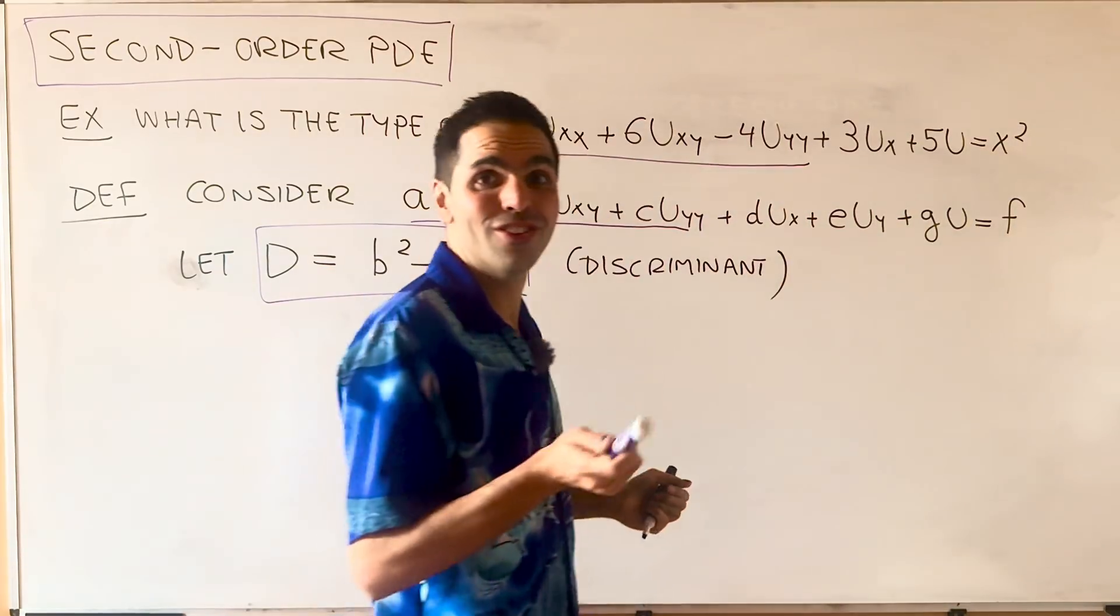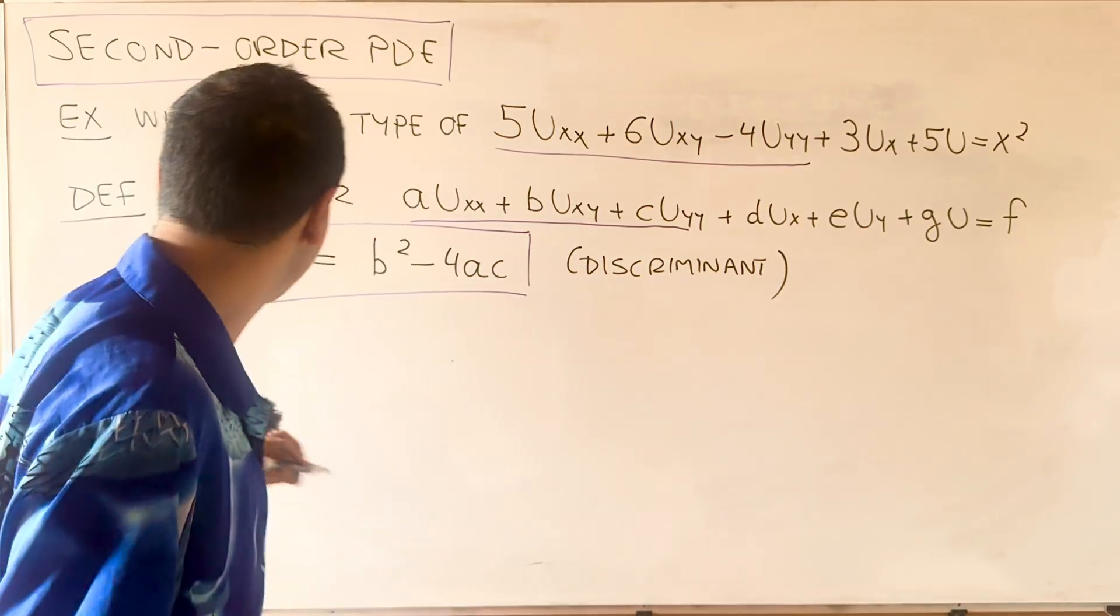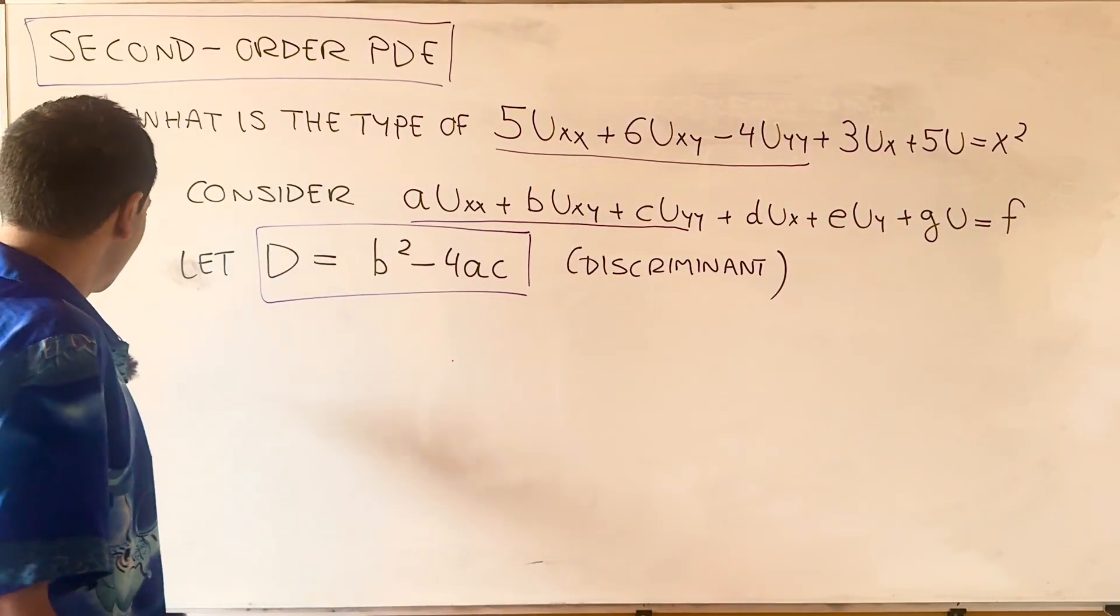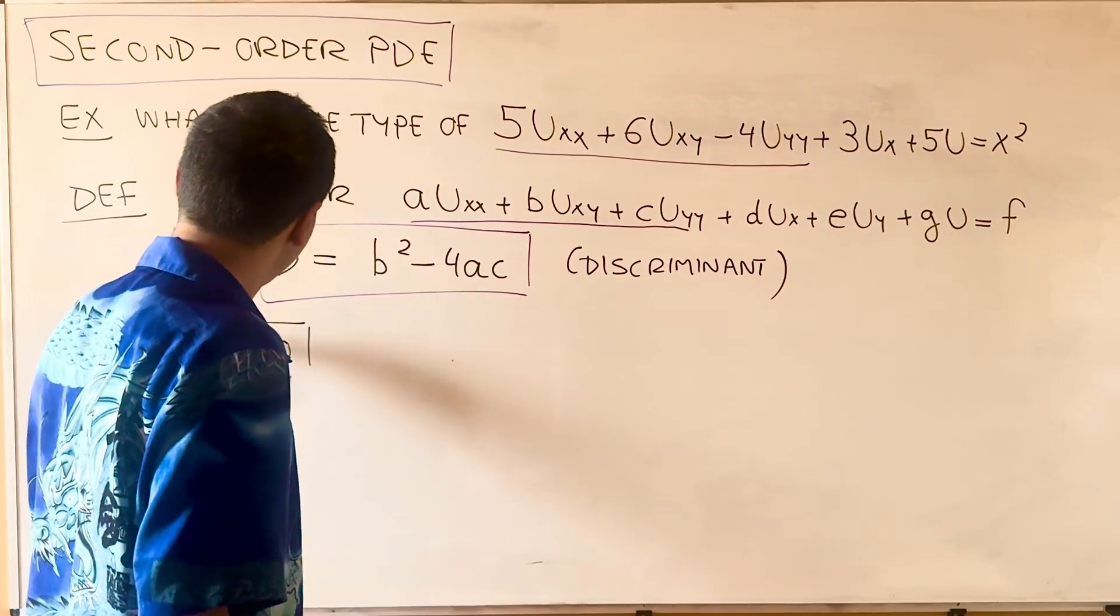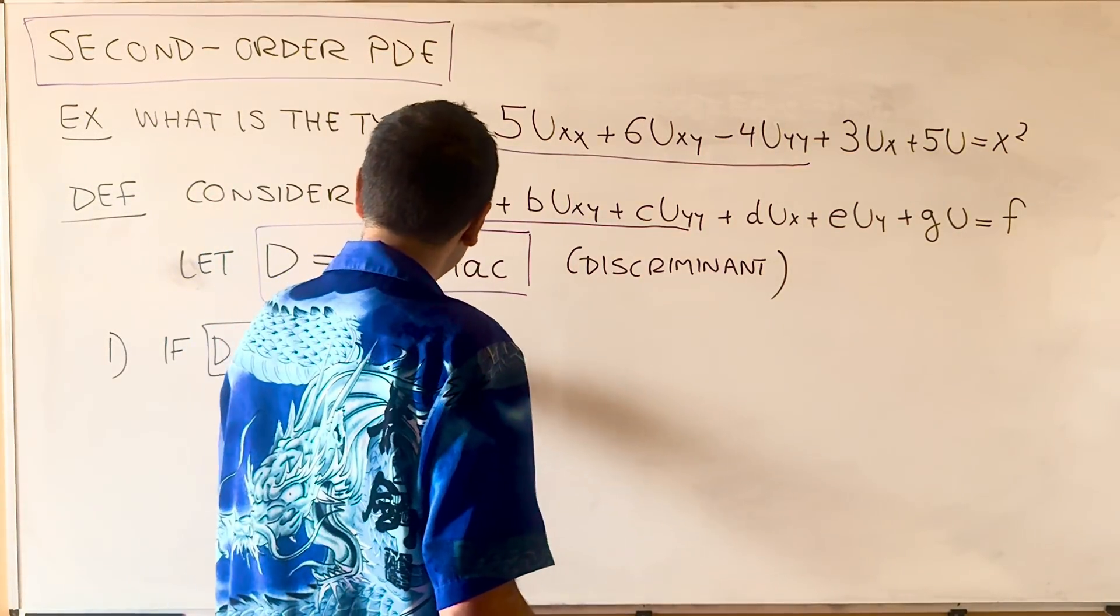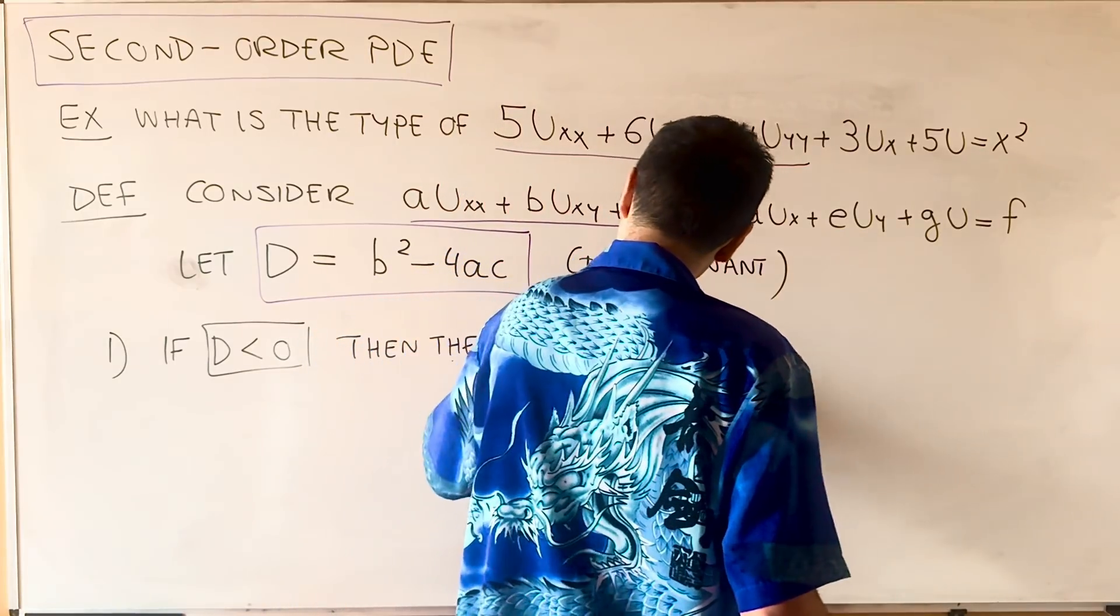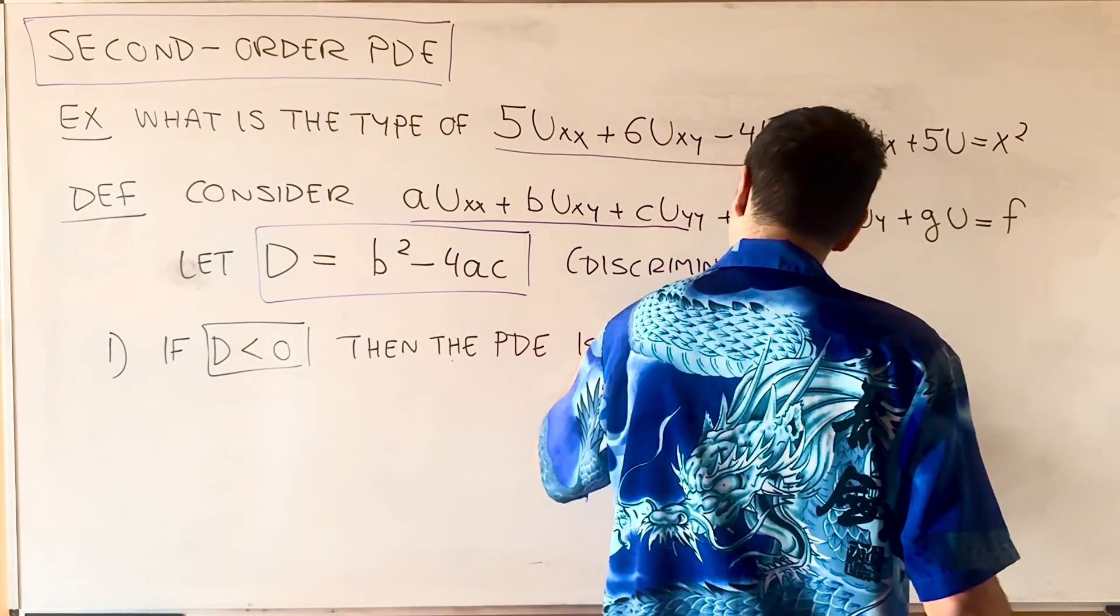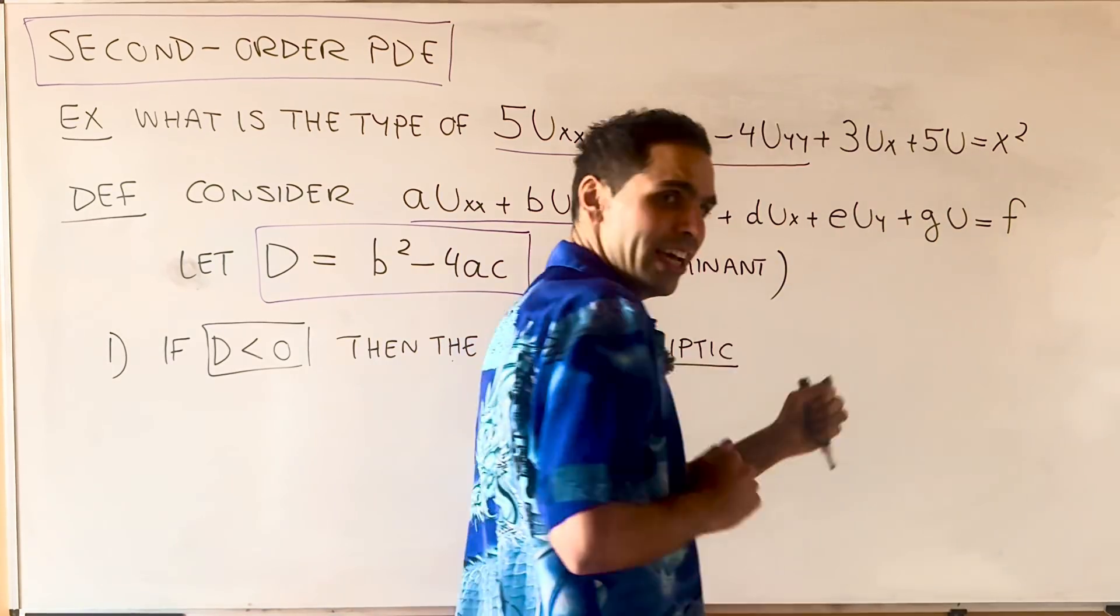Just like for the quadratic formula, everything depends on the sign of D. If D is negative, then the PDE is called elliptic - not like elliptical, but more like ellipse.